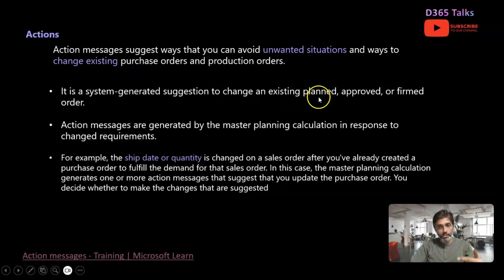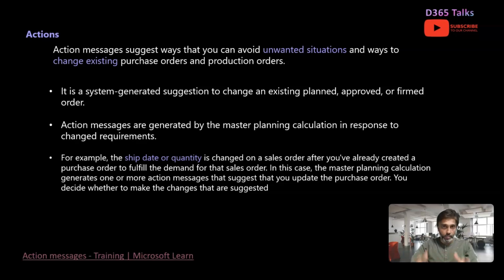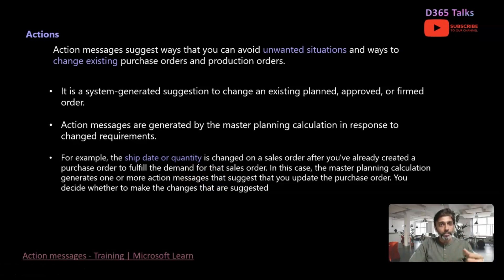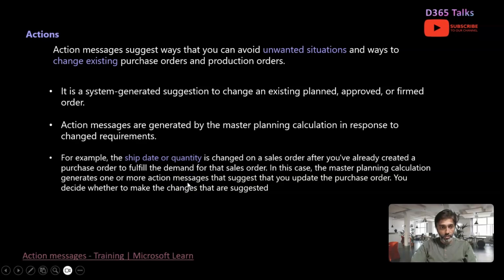It is a system-generated suggestion to change an existing planned, approved, or firmed order. In the case of planned order generation, it goes through various stages. Once planned orders are in these stages, you will still be able to incorporate changes. The action messages are generated by the master planning calculation in response to changed requirements — changes with respect to the ship date in the sales order or with respect to quantity. Actions are the best way to notify the planner that these changes have been made, so the planner can revisit the planned orders which were generated earlier. That's the whole idea for using actions in Dynamics 365 master planning.